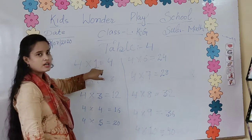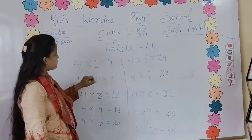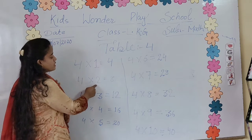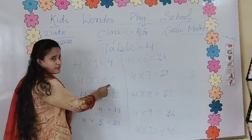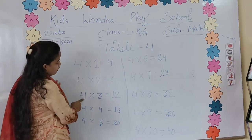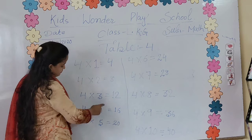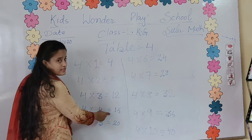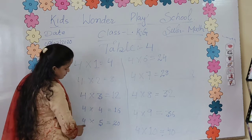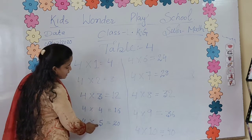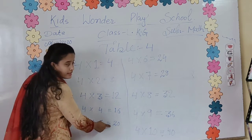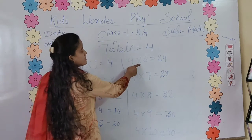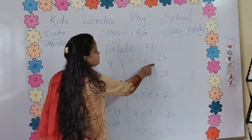1's are 4. 4's are 2's are 8. 4's are 3's are 12. 4's are 4's are 16. 4's are 5's are 20. 4's are 6's are 24.